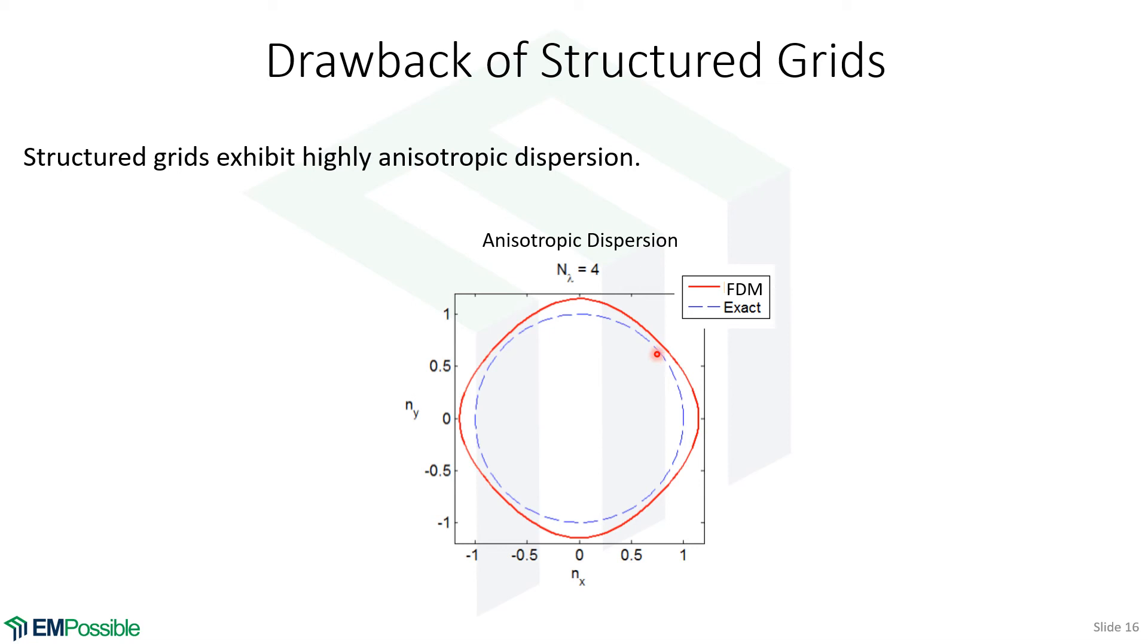But on our Yee grid, we not only see that this refractive index is different than the physical wave, it's a little bit higher, making the wave travel a little bit slower, but it's anisotropic. It's different for different directions, and we actually see that it's worse along the Cartesian directions than it is along the diagonal. The dispersion is actually the least along the diagonal. So we get anisotropic dispersion from our structured grid.